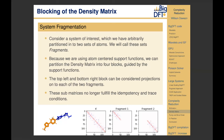Because in BigDFT we use atom-centered support functions, we can partition the density matrix itself into four blocks guided by which atoms the support functions are associated with. In the top left is a sub-density matrix associated with Fragment 1, and in the bottom right one associated with Fragment 2. However, while I call these sub-density matrices, they're not really density matrices in the sense that they no longer fulfill the two conditions — they are no longer idempotent and the trace has changed.